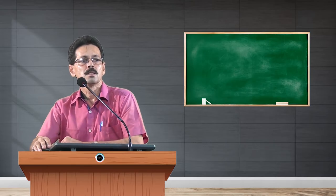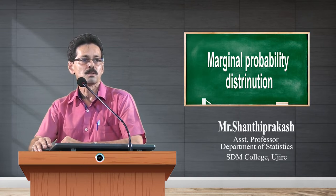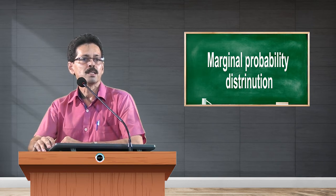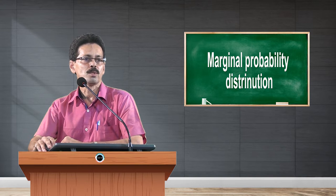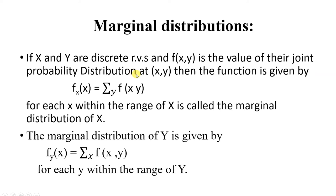Hi, welcome friends. Today I will discuss the concept of marginal distributions and conditional distributions. Marginal means it is the individual distributions of the random variables. Suppose if x and y are discrete random variables and f(x,y) is the value of their joint probability distribution at x,y, then the marginal distribution of x is given by f(x), equal to summing the joint probability distribution over y, for each x within the range of x.